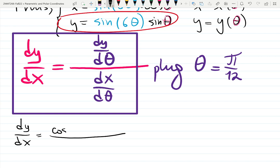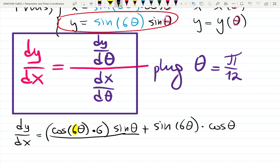That is the chain rule. Copy sine theta plus copy sine 6 theta times derivative of sine. Product rule. Product rule.